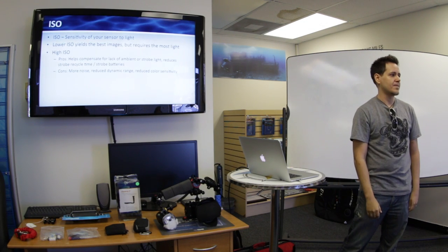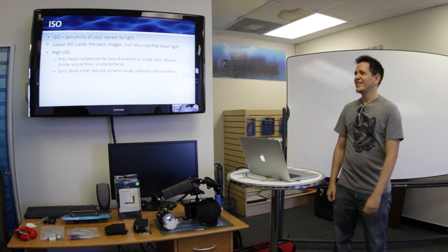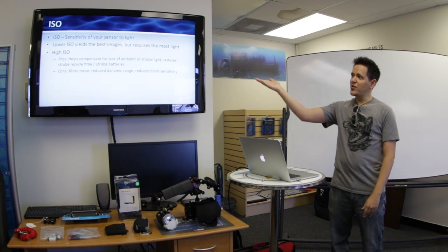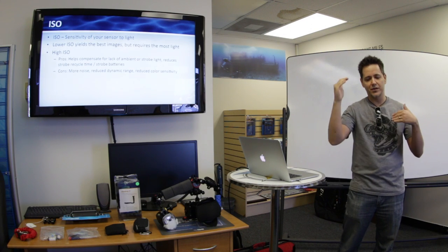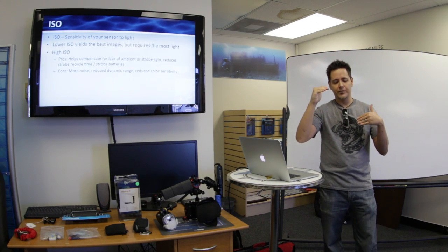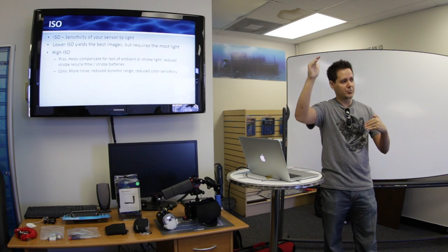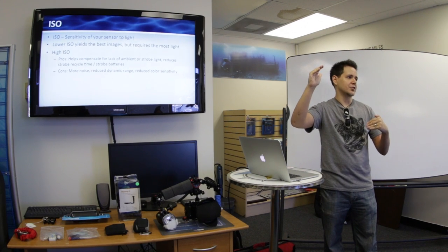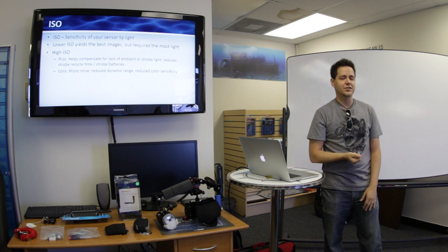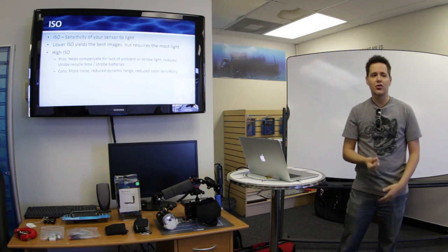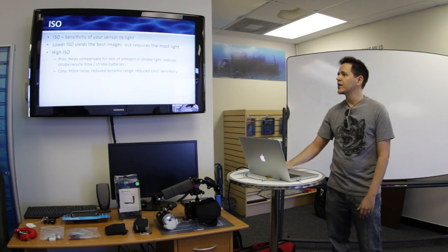What do you mean by a little bit of noise? We're going to talk about noise in the next slide. So apart from noise, you can also get reduced dynamic range, which basically means the range between your darks and your brights in the picture can get kind of squashed. And then your color sensitivity isn't as good. So overall, the image is not as good at higher ISOs.